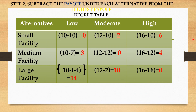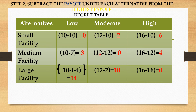After completing the 'High' column, your regret table should look like this: the highest figures under low, moderate, and high are 10, 12, and 16. For the 'High' column, the original payoffs are 10 million, 12 million, and 16 million, so subtracting from 16 gives us 6 million, 4 million, and zero. The zeros appear because those were the highest payoffs — subtracting the highest from itself equals zero.